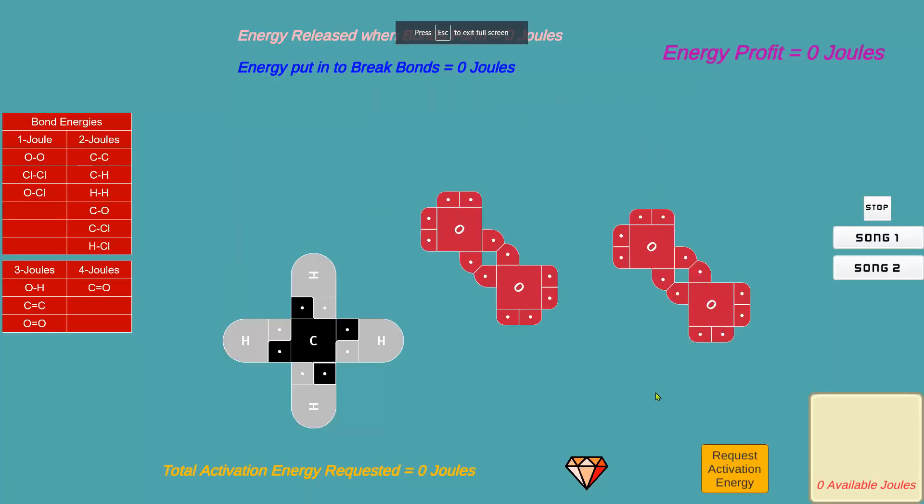So now this simulation, it's not really a game, is all about making and breaking bonds and looking at energy. This jewel here allows you to try to break bonds. You drag it onto a bond you want to break. I'm hoping you recognize that's a bond. In this case, I don't have enough jewels to break the bond, so I need some jewels.